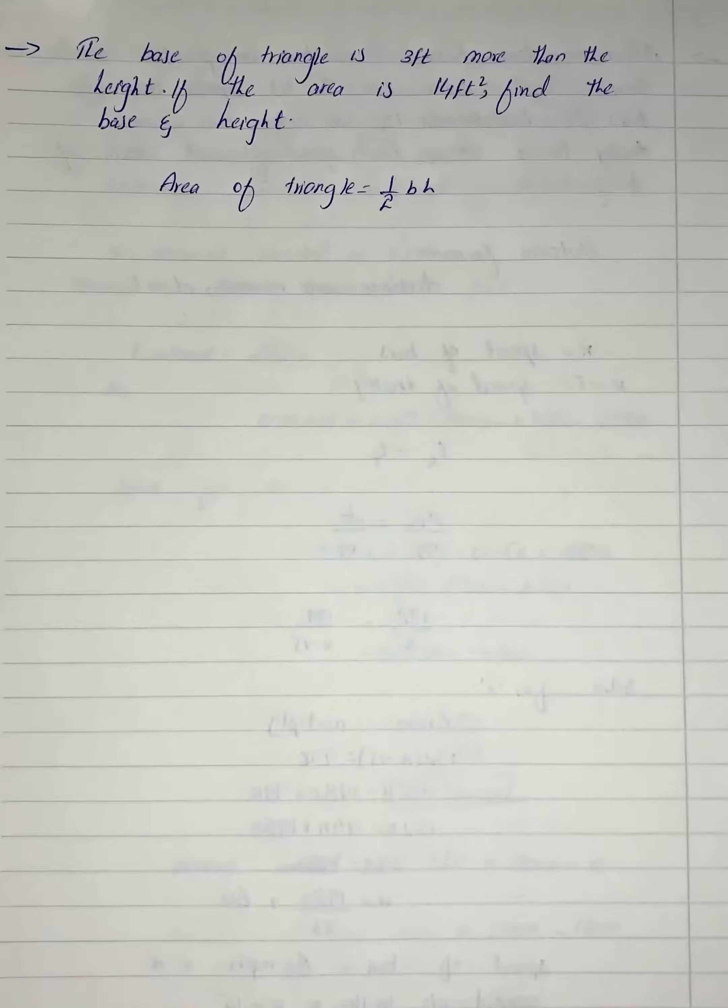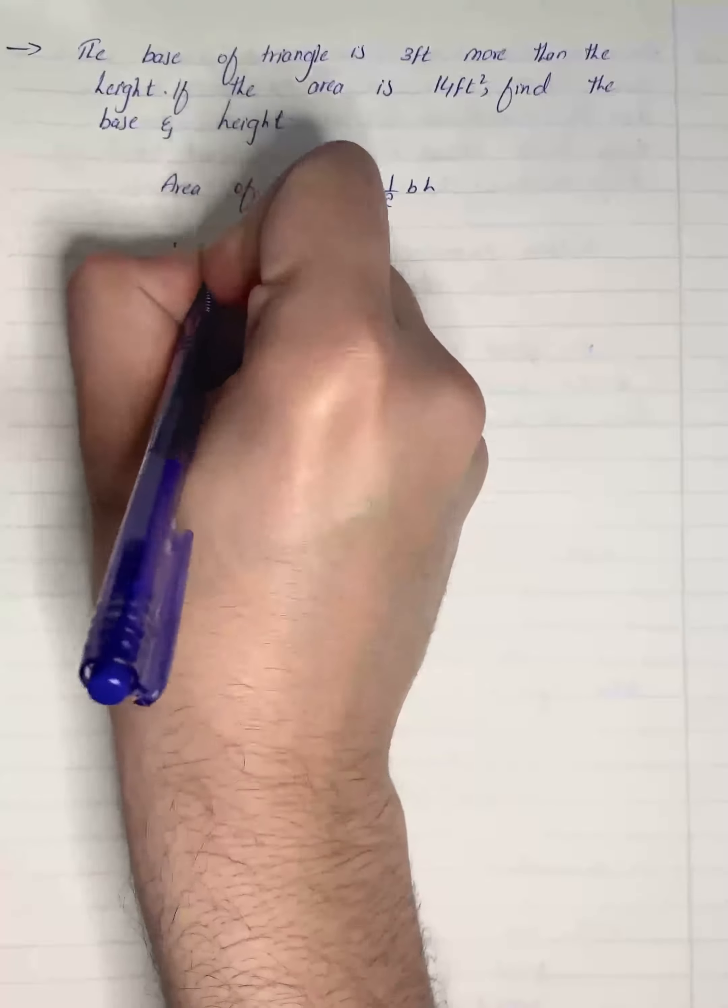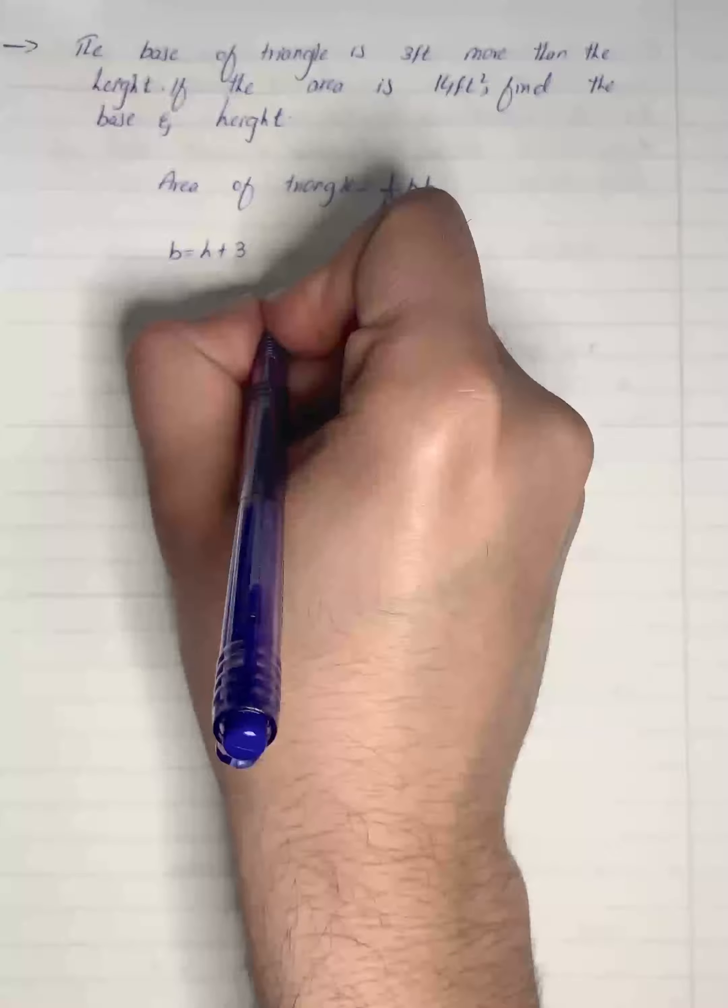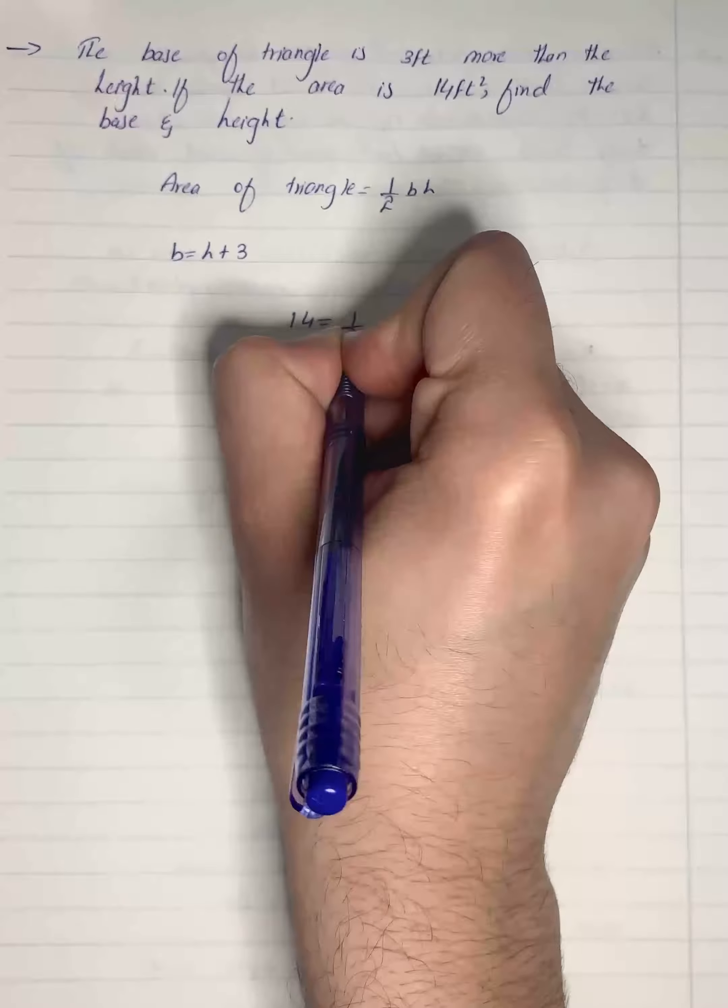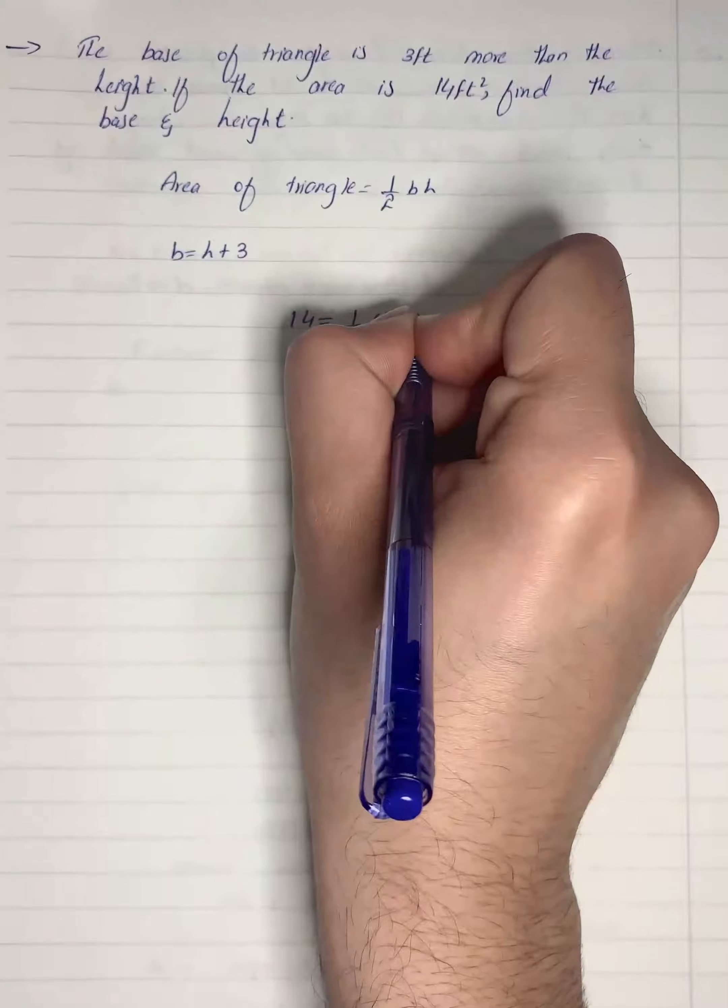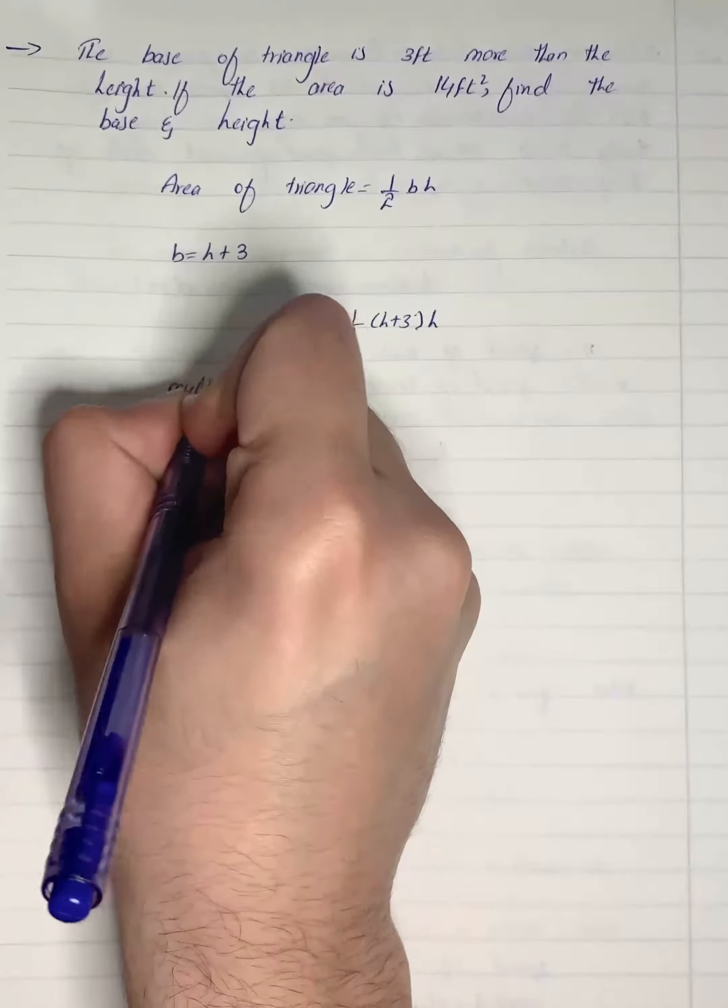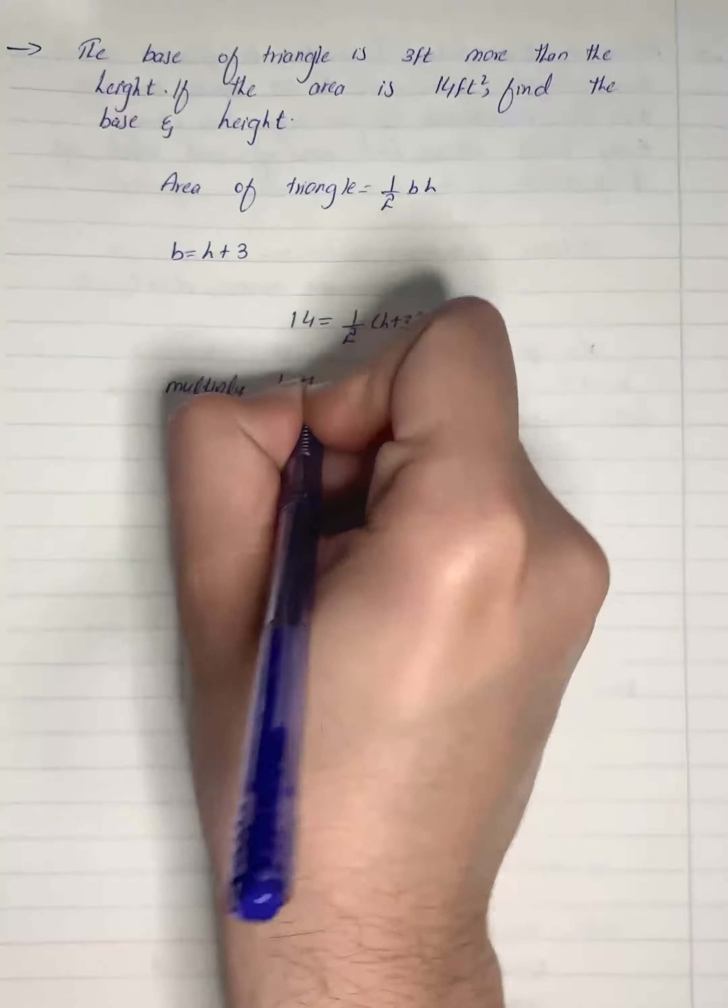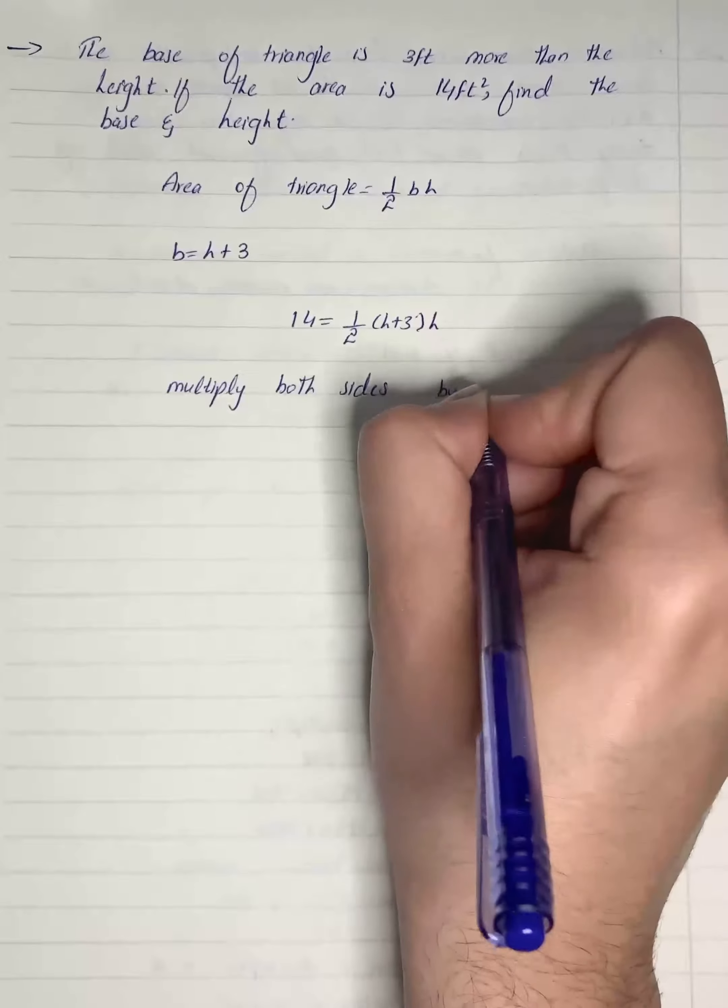So we know that this is equal to height plus 3 feet, right? So we can write that 14 is equal to 1 by 2 into h plus 3 into h. We will multiply both sides by 2.